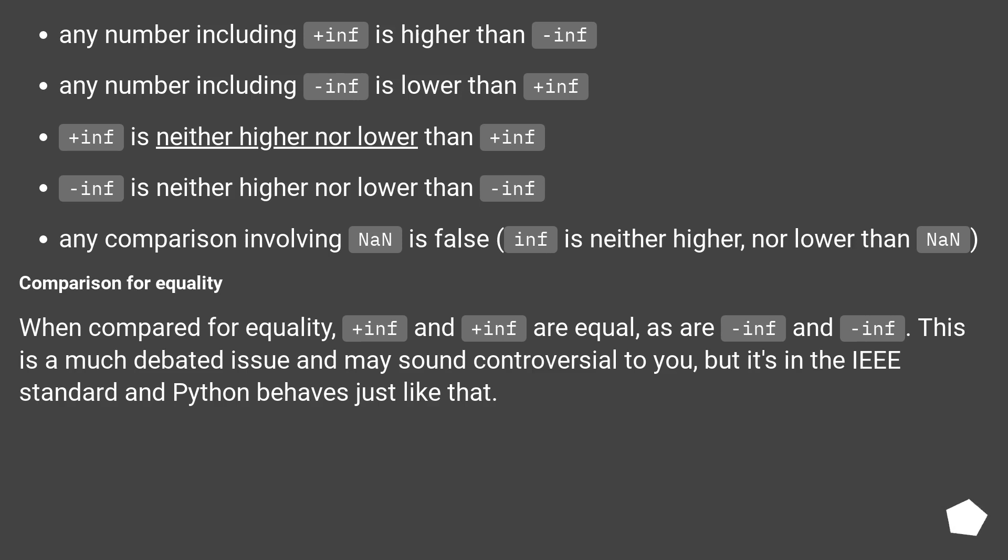Comparison for equality. When compared for equality, plus inf and plus inf are equal, as are negative inf and negative inf. This is a much debated issue and may sound controversial to you, but it's in the IEEE standard and Python behaves just like that.